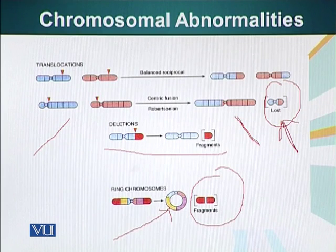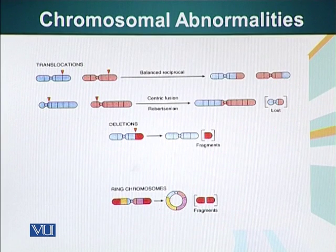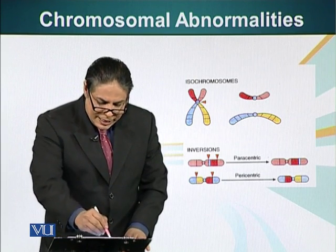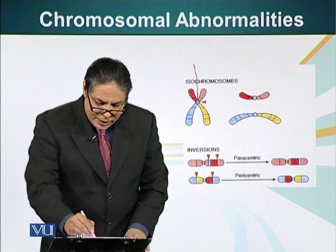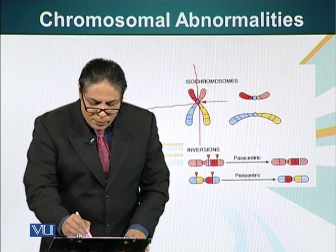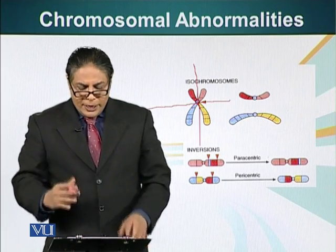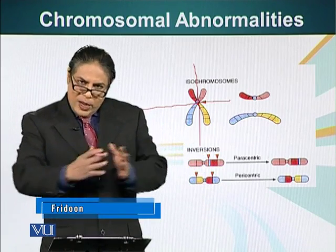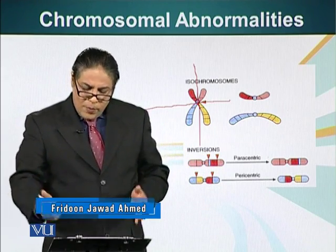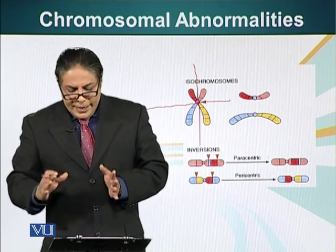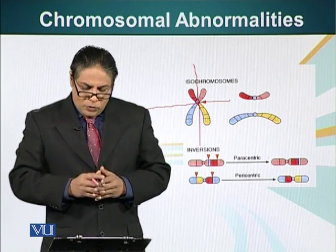Let's look at isochromosomes. Normally a chromosome separates its two chromatids along the long axis during meiosis. In some cases, instead of the two chromatids separating, the two P arms go to one daughter chromosome and the two Q arms go to the other, producing a chromosome with two identical arms. This type of chromosome is called an isochromosome and generally occurs with the X chromosome.